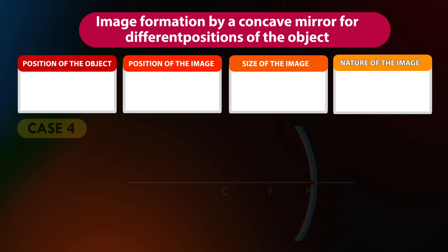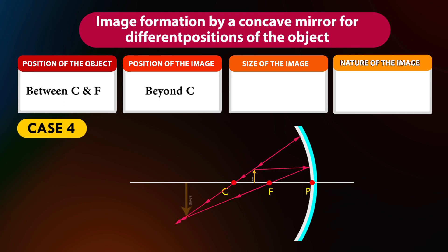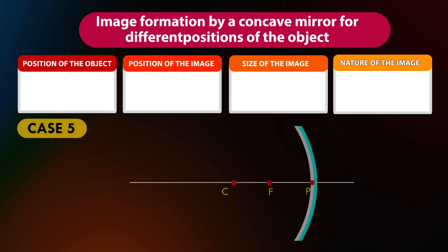Case 4: If the position of the object is between C and F, the position of the image will be beyond C. The size of the image will be enlarged. The nature of the image is real and inverted.